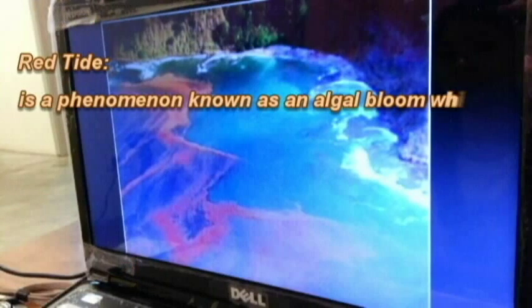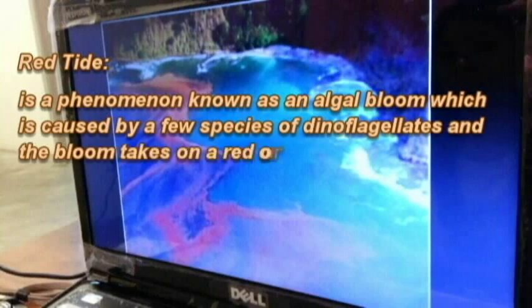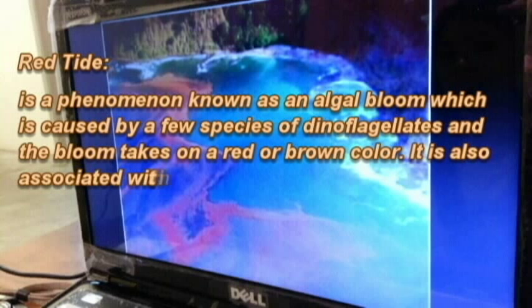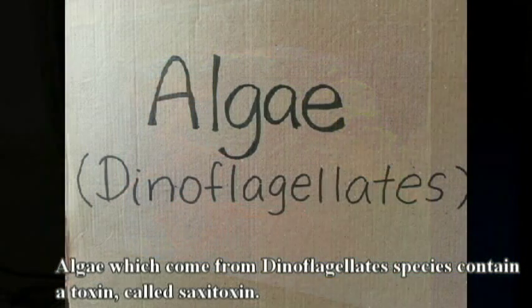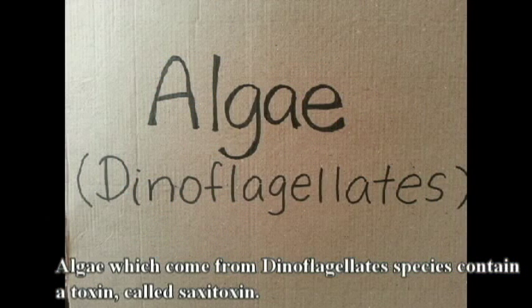Red tide is a phenomenon known as an algal bloom, which is caused by a few species of dinoflagellates, and the bloom takes on a red or brown color. It is also associated with the production of natural toxins, such as saxitoxin. Algae from dinoflagellate species contain a toxin called saxitoxin.